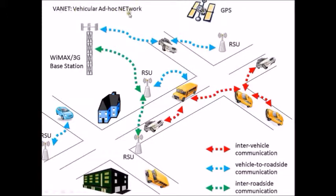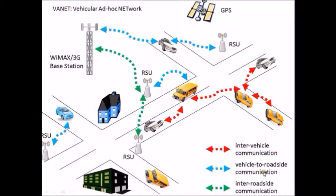To relay information — like internet information — you can communicate between vehicles. The red lines here show inter-vehicle, or V2V, communication. You can also communicate between vehicles and roadside units — it could be a grocery store, a traffic light, or anything on the roadside. The blue lines indicate vehicle-to-roadside communication. And sometimes in a VANET you may have inter-roadside communication, like between two traffic lights or between a traffic light and other types of devices.